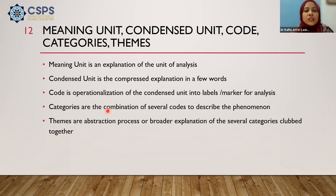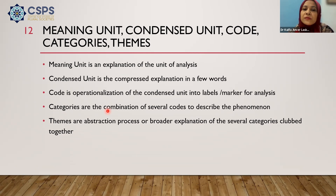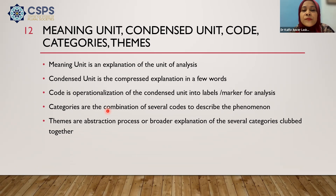Once you do the coding, you do the inter-coder reliability test. There can be a percent agreement test — this is the simplest form of inter-coder reliability. That means you find the percentage of agreement of both the coders: out of the total number of codes that were coded, on how many did they agree. This is the percent agreement — a basic formula that is applied. There are also other high-end coding tests that are statistically used, like Cohen's Kappa.